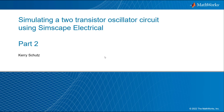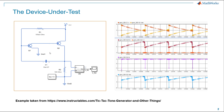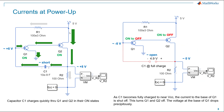Hello, this is Kerry Schuetz, and this is our second video on this two-transistor oscillator circuit built up using Simscape Electrical. In the first video, we showed what the circuit looked like and went over how it worked. We covered the charge and discharge cycles, and when the transistors turn on and when they turn off — basically all controlled by this R1-C1 resistor-capacitor combination.